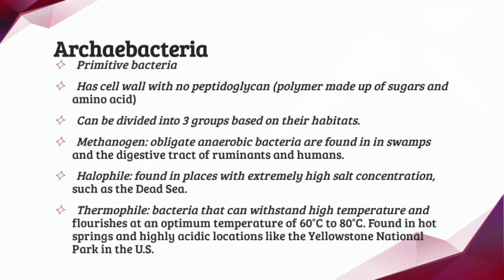Next, we have the Archaebacteria kingdom, also known as primitive bacteria. Primitive means the oldest or the first one. It has a cell wall with no peptidoglycan, which means a polymer made up of sugars and amino acids. The Archaebacteria kingdom can be divided into three groups based on their habitats.